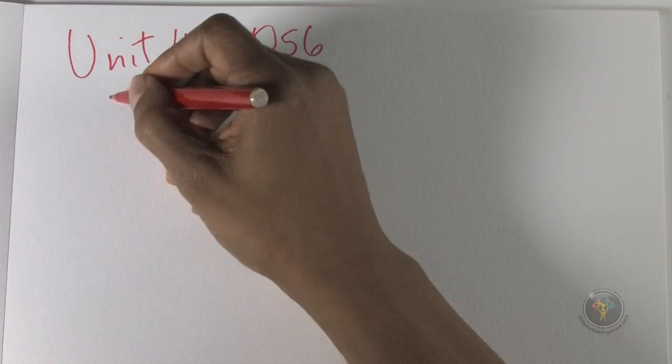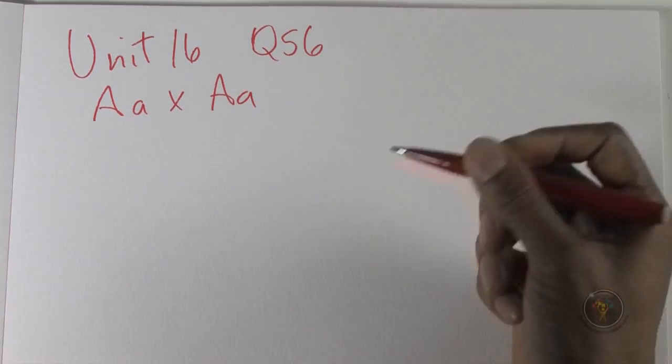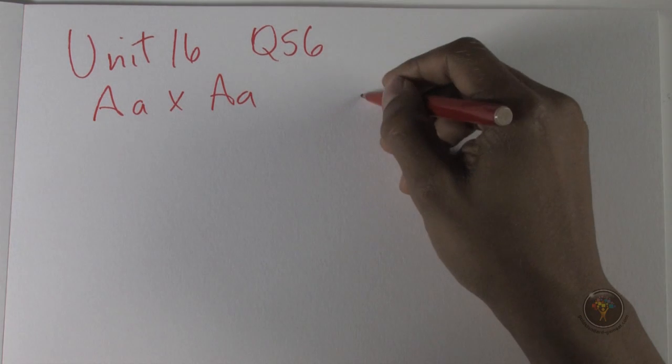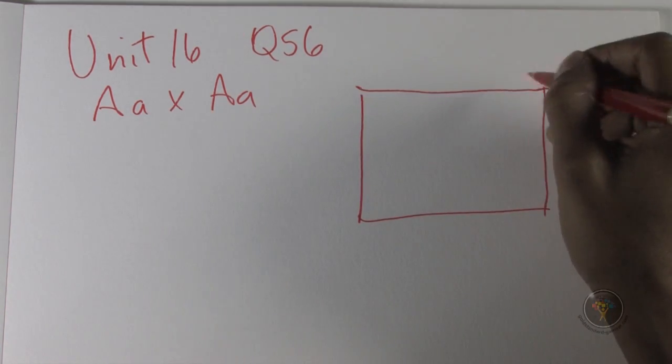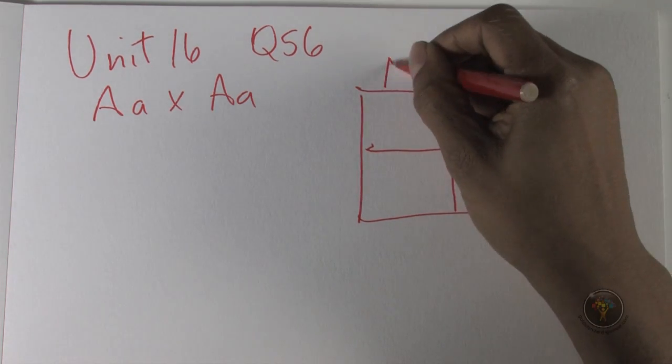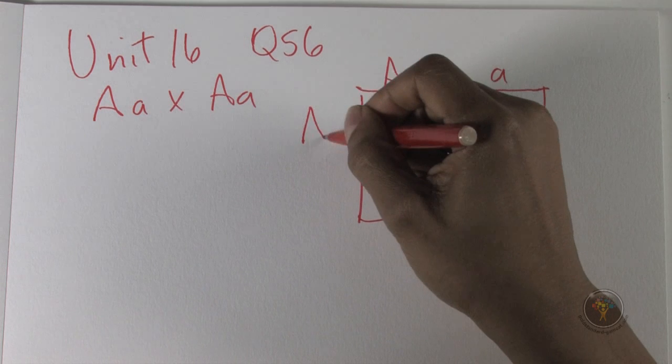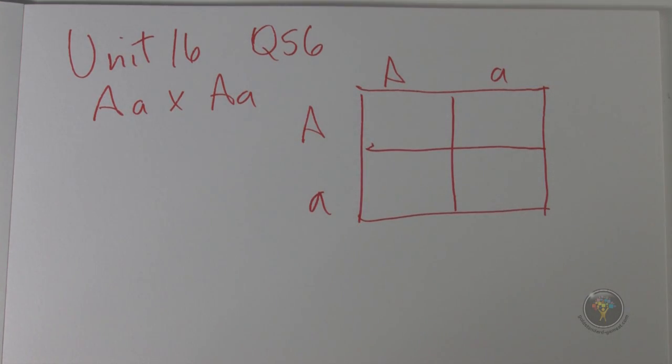So heterozygous for the condition means that we're going to do Aa cross Aa. So this would be heterozygous. So we're going to do a Punnett square. And we have A, a, A, and a. Now let's consider this for a moment.